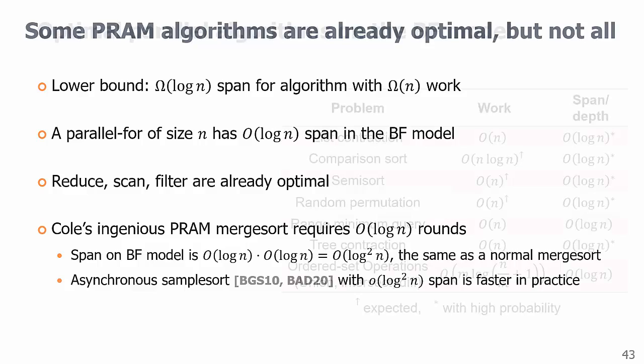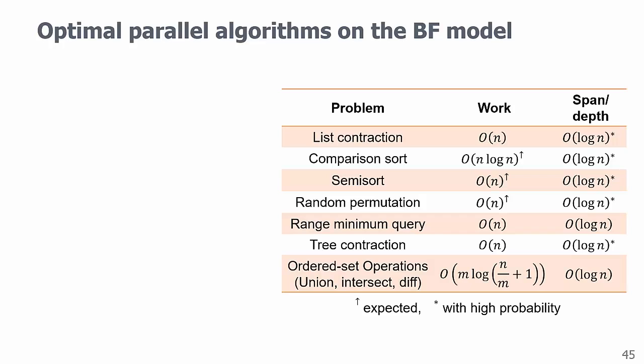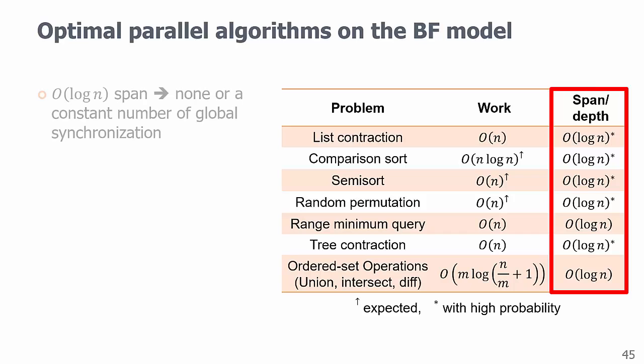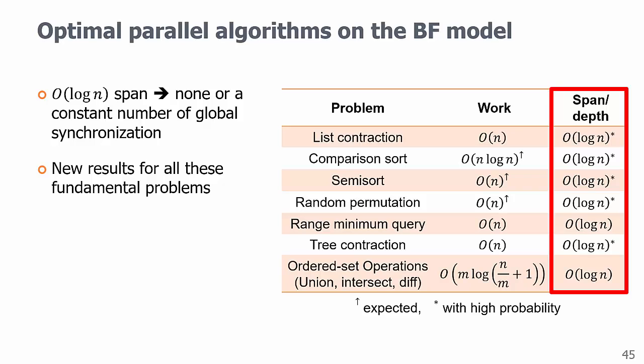In this paper, we provided a list of novel optimal algorithms in the binary forking model, some are randomized. An optimal algorithm must achieve order of log n span, so it's highly asynchronous and only uses none or constant number of global synchronization.